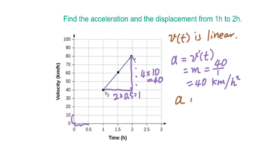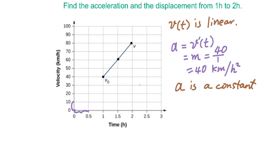In other words, acceleration is a constant when the velocity is a linear function. The displacement will equal the integral from 1 to 2 of the velocity function dt. We know the integral is the signed area enclosed by the curve and the x-axis. So for the displacement in this graph, we can show the area like this.